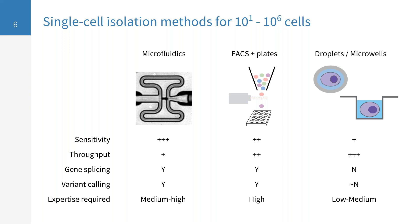Increasing further in throughput are methods relying on droplets or micro-wells, in which tens of thousands to millions of B cells can be interrogated in parallel. While this has the benefits of very high throughput, in some cases you lose the ability to interrogate splicing or do variant calling, and typically the sensitivity of these methods is lower. By sensitivity I mean the capture efficiency of each individual transcript from a cell and consequently the number of genes detected per cell.